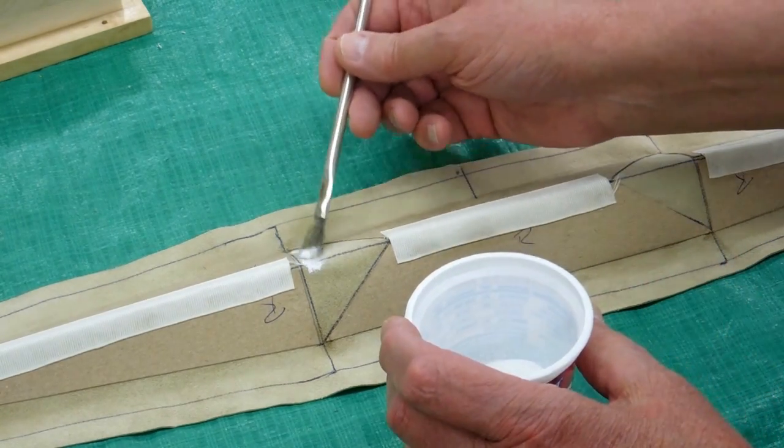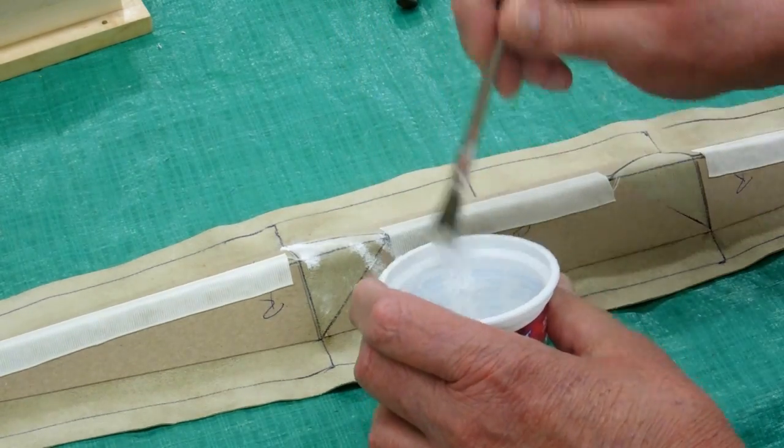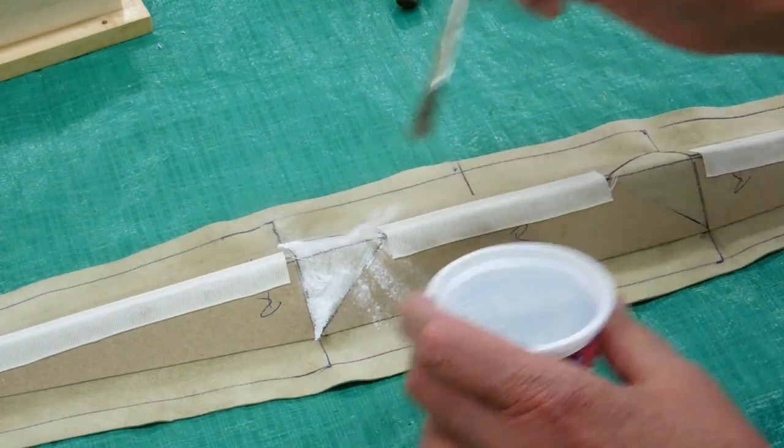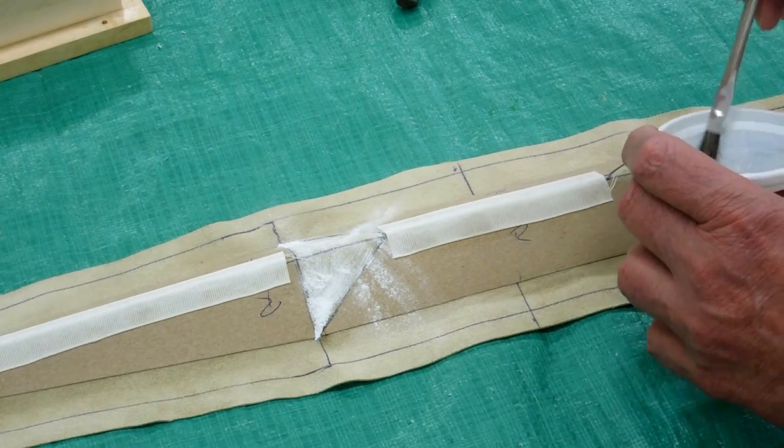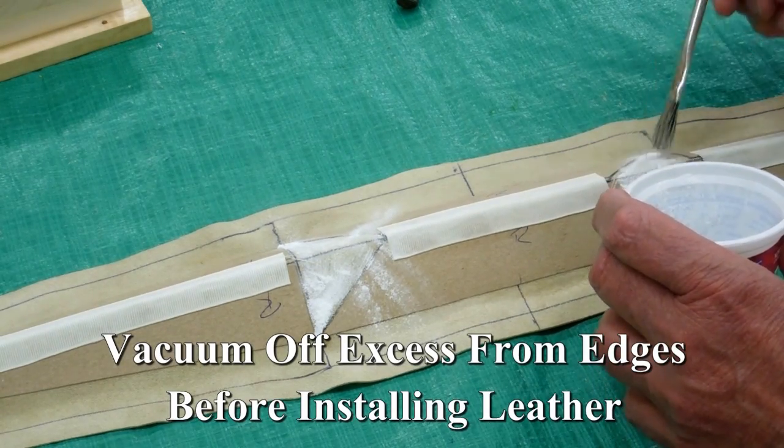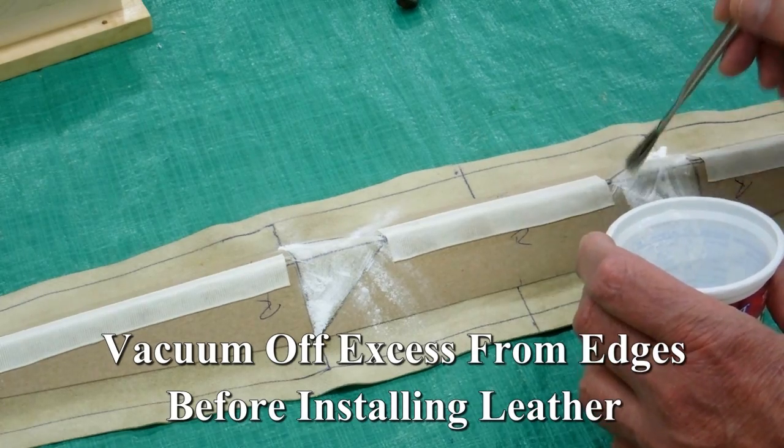Now we want to apply just a little bit of talcum powder on here as a lubricant. I'm going to try not to get the talcum powder where the fish glue is going to go. It might be easier said than done.